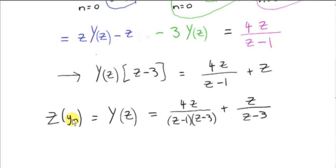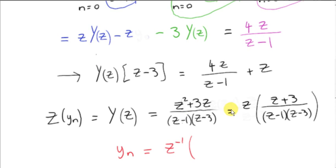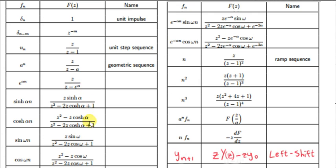Our job is to get the sequence y(n) — the solution to the problem. So we want to get the inverse z-transform. Here we have Z{y(n)}, so y(n) is going to be the inverse z-transform of all of this. What I will do is add the two fractions and combine them into a single fraction. We need z(z−1) on top, so z(z−1) over (z−1)(z−3) gives us z over z minus 3. Simplifying the numerator, we get z² minus z plus 4z, which is z² plus 3z, and we can factorize z out of the top.